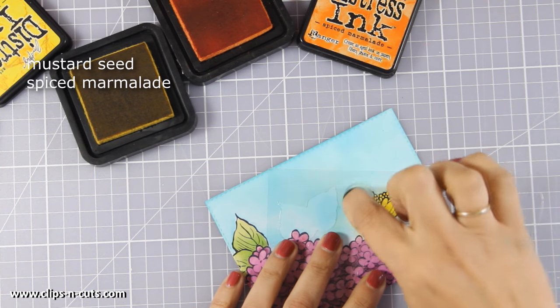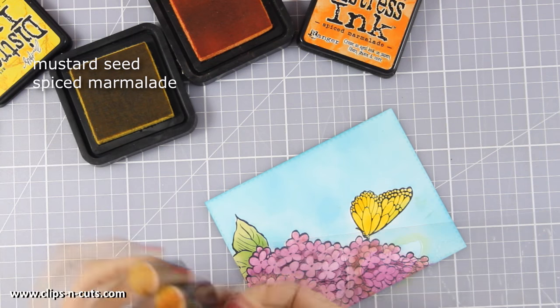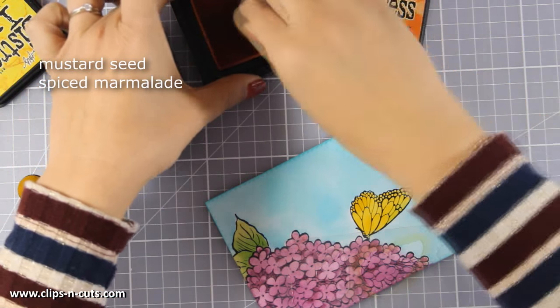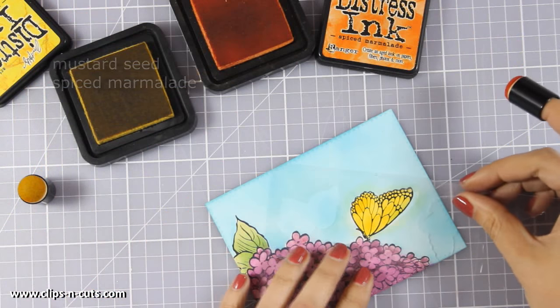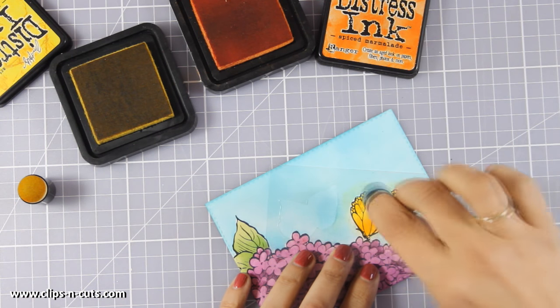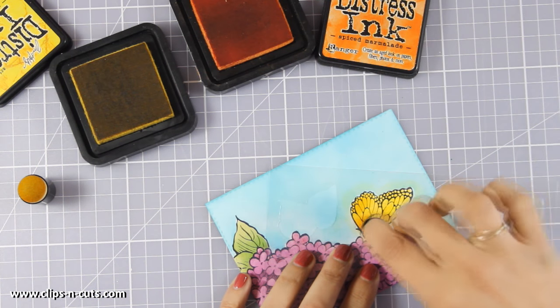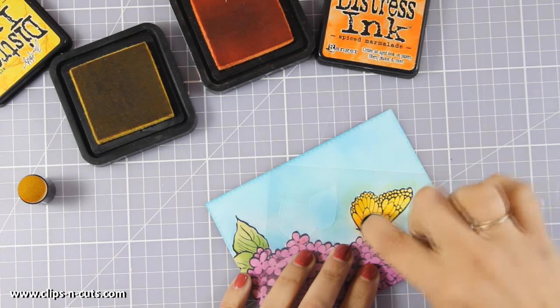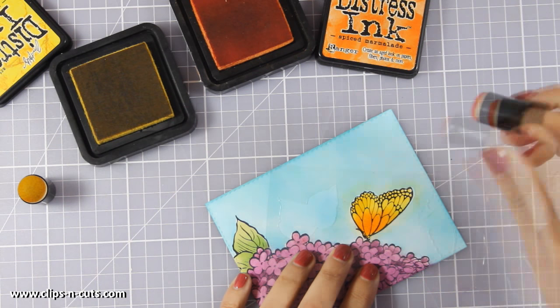Now with the same method I am going to color my butterfly. I am mixing up two colors, that's mustard seed and spiced marmalade and if you have seen my card yesterday you might have noticed that I am pretty much using the same colors just because they were on my table.